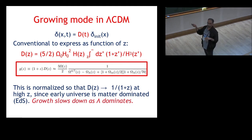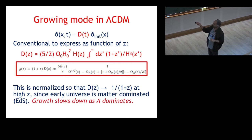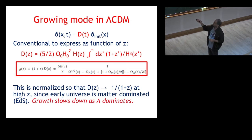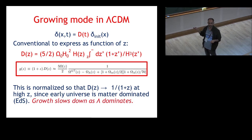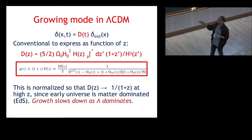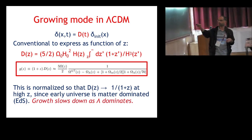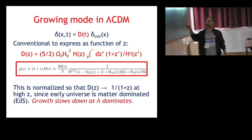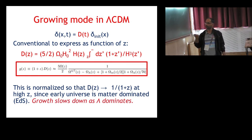You can do everything together — it turns out the solution for the growth function is given by an integral. If I know the Hubble parameter as a function of redshift, which I can write down in a Lambda CDM universe, I can solve this numerically or express it in terms of hypergeometric functions. Or you can use fitting functions shown to be very accurate — Bernardo's Physics Reports gives a particular equation. This is called the growth function, and it's used everywhere in linear perturbation theory and also in non-linear evolution.